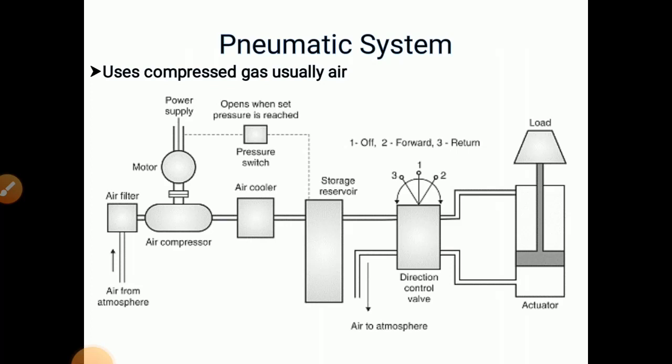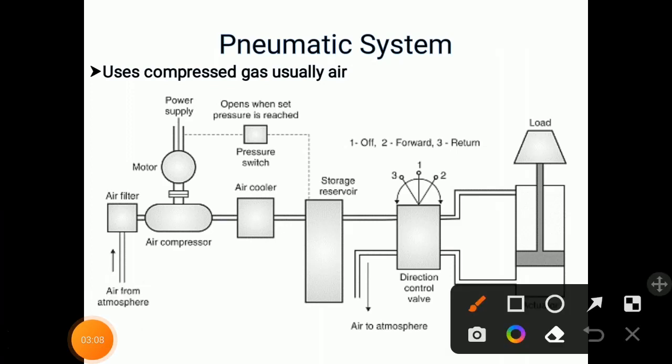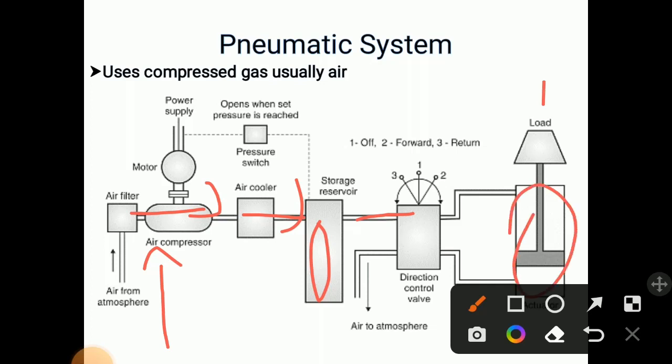So in pneumatic system we use compressed gas like air. So here we need air compressor. Air from atmosphere is taken, filtered, then air compressor compresses the air, then through this air cooler sent to storage reservoir. And storage reservoir, the direction control valve controls the movement of this cylinder and according to this load can be moved up and down. So here the compressed gas is used as air.